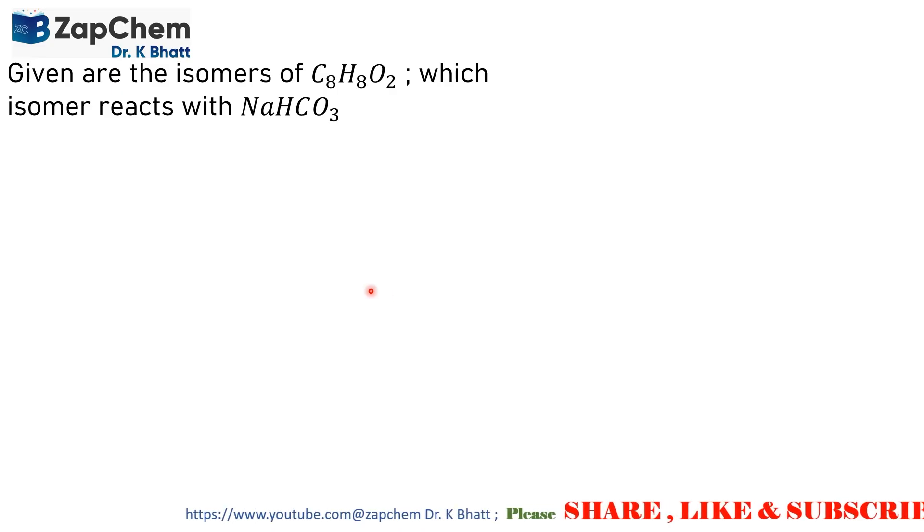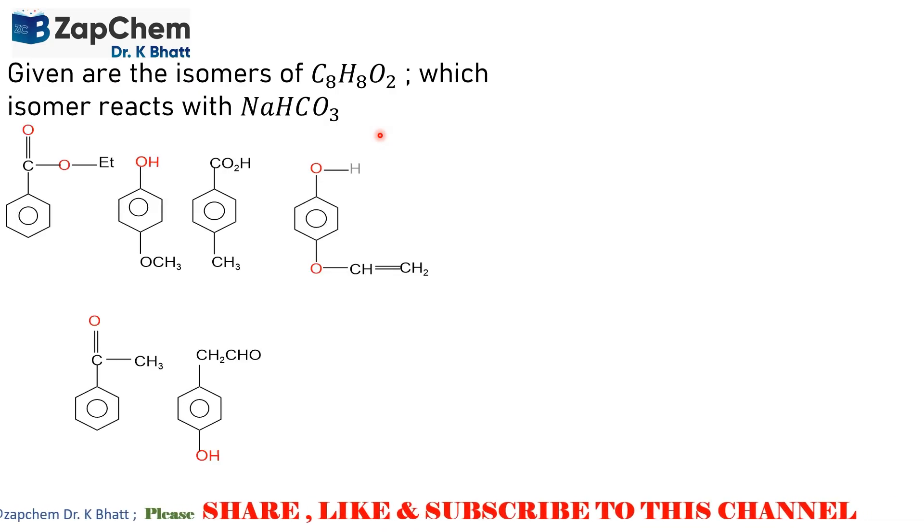A simple question on isomers of organic compounds is given here. The question is: given are the isomers of C8H8O2, which isomers react with sodium bicarbonate NaHCO3, and the structures are here.